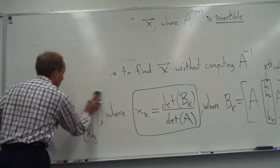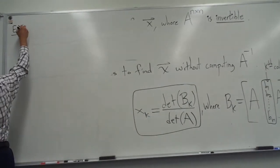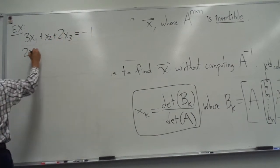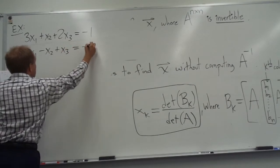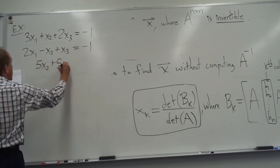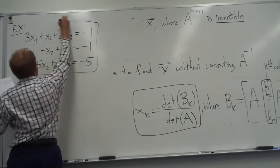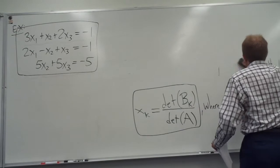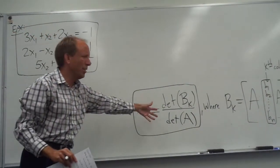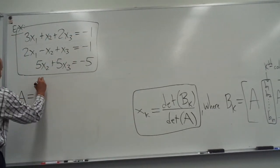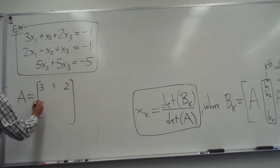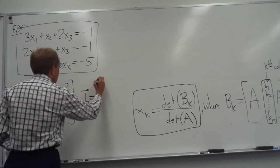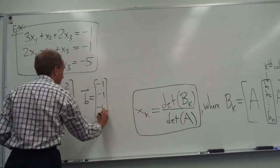So suppose, as an example, that we have the system 3x1 plus x2 plus 2x3 equals negative 1, and 2x1 minus x2 plus x3 equals negative 1, and 5x2 plus 5x3 equals negative 5. So let's take this system. Of course, it's just a 3x3 matrix, so everything's going to be 3x3, so these determinants won't be too hard to find. So for example, the matrix capital A, in this case, is going to have 3, 1, and 2 on the top, and then 2, negative 1, and 1, and then 0, and 5, and 5. And the B vector, which is the right-hand side, is just these numbers here, negative 1, negative 1, negative 5.